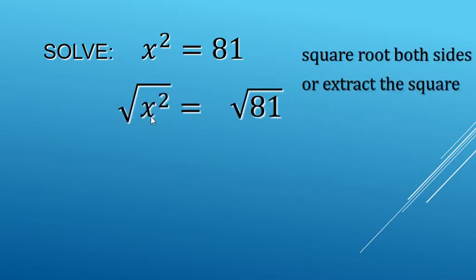Here we go. Square root of x squared on the left, square root of 81 on the right. Now, any time we do this, we also need to remember a plus or a minus there. We'll get to why in a minute.